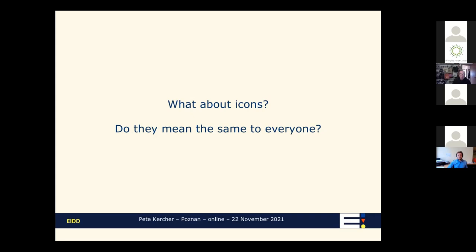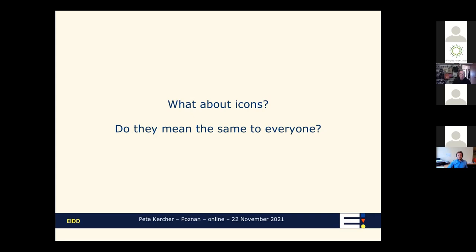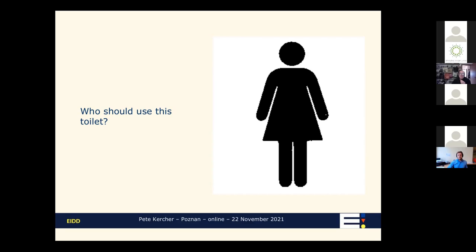What about icons? We presume they mean the same thing to everybody — but do they really? Simple question: who should use this toilet? We all know the icon with a skirt represents a women's toilet. But when I ask an audience in person, usually fewer than 50% of women are actually wearing a skirt. Why do we use the skirt as the symbol? Especially considering there are cultures where men wear clothing of that kind — the jalabiya — and women wear trousers. It's a convention we have learned to accept and interpret, but it doesn't necessarily reflect the reality of our world.